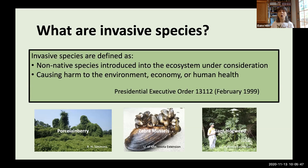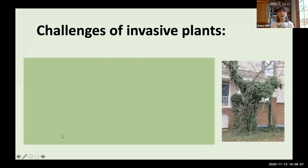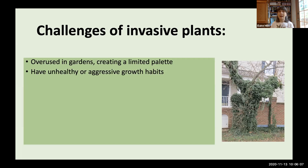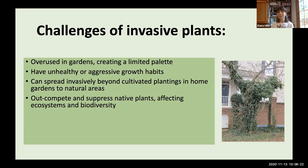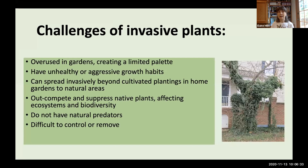An example of an invasive species causing harm to human health is the giant hogweed, which has a toxic chemical in its stems and leaves that can cause severe burns to anyone who touches it. What we'll be focusing on today are invasive plant species — like porcelain berry — that cause harm to the environment. Invasive plants may be overused in gardens, have aggressive growth habits, spread to natural areas, out-compete native plants, affect ecosystem balance and biodiversity, lack natural predators, and don't support local native wildlife.